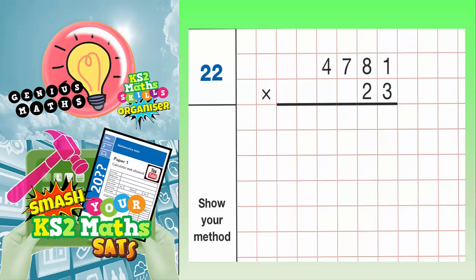Question 22. 4,781 multiplied by 23. Now we're doing a four digit number multiplied by a two digit number, which basically means we're going to have to be doing long multiplication.